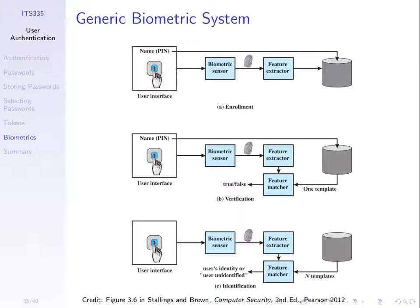Identification is slightly different. Identification is using the biometric to find out who you are — you don't submit your name, you just scan your fingerprint. The sensor grabs the fingerprint, the feature extractor extracts the key parts — the contours and so on — and then the features from the scanned fingerprint are compared against, in the worst case, all of the fingerprint information in the database to find a match. If a match is found, the user is identified. If not, then the user hasn't been identified.